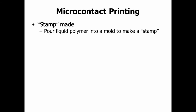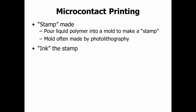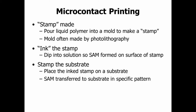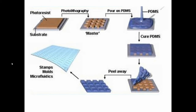With micro contact printing, you're literally making a stamp. You pour a liquid into a mold — we can do this in class using PDMS chemicals. The mold is often made with photolithography. You ink the stamp by dipping it into a solution; a self-assembled monolayer can form on the stamp surface, and then you stamp the substrate to transfer your ink. In the example shown, a mold made via photolithography with basic square shapes has PDMS poured in, which is then cured and peeled away to create stamps used in microfluidics.